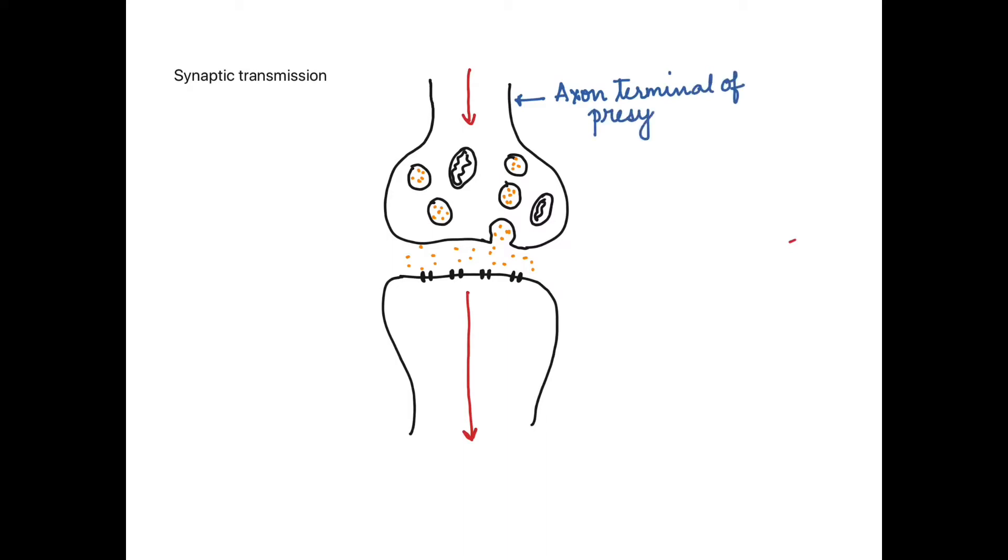So the space is called the synaptic cleft. The neuron before the space is called the presynaptic neuron. The swollen part is called the synaptic bulb. At the junction of the axon and the synaptic bulb are the calcium channels.